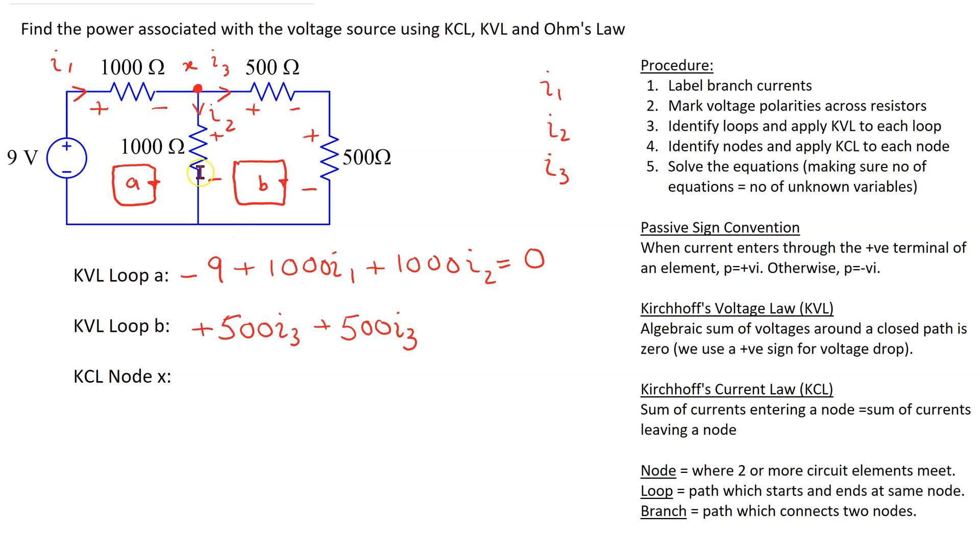And lastly for this resistor we can see that we are going from minus to plus. So this is a voltage rise and this is written with a minus sign. So this is minus 1000 I2 is equal to 0.